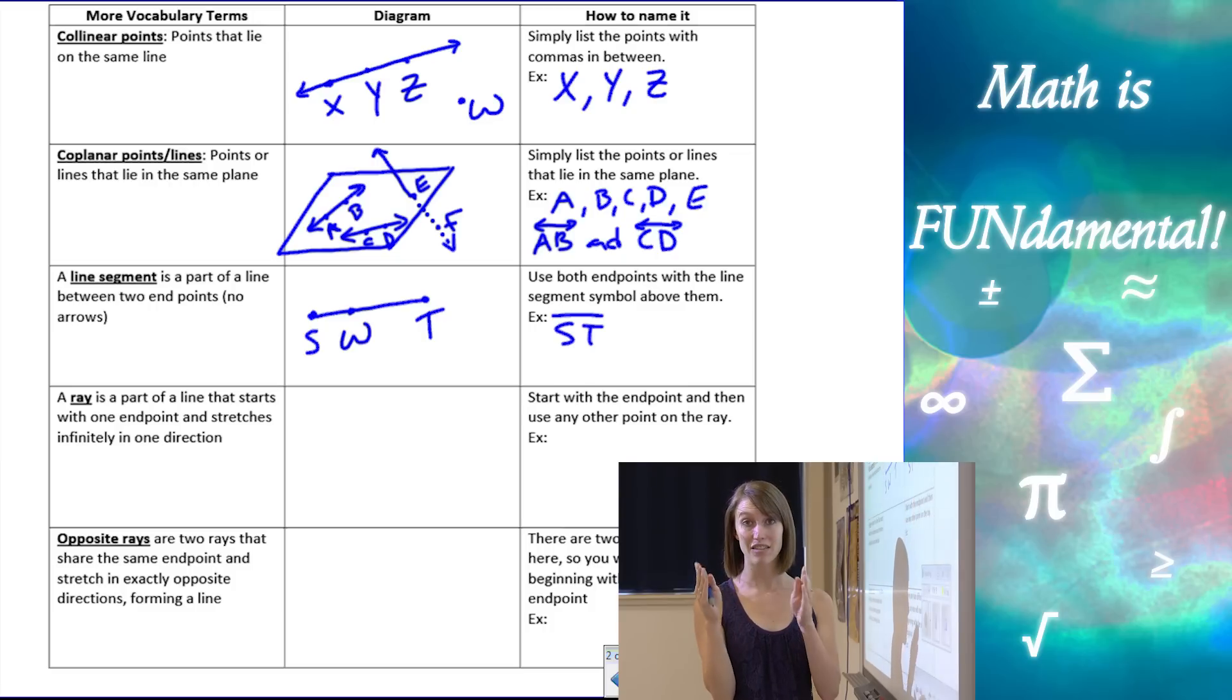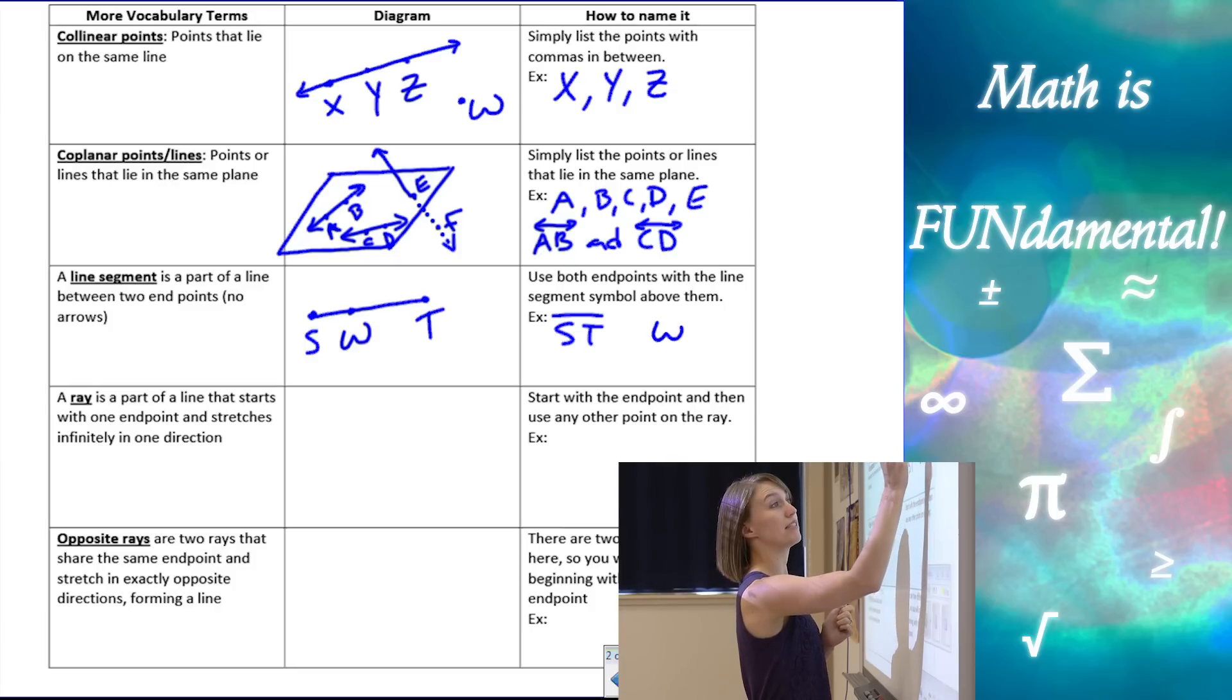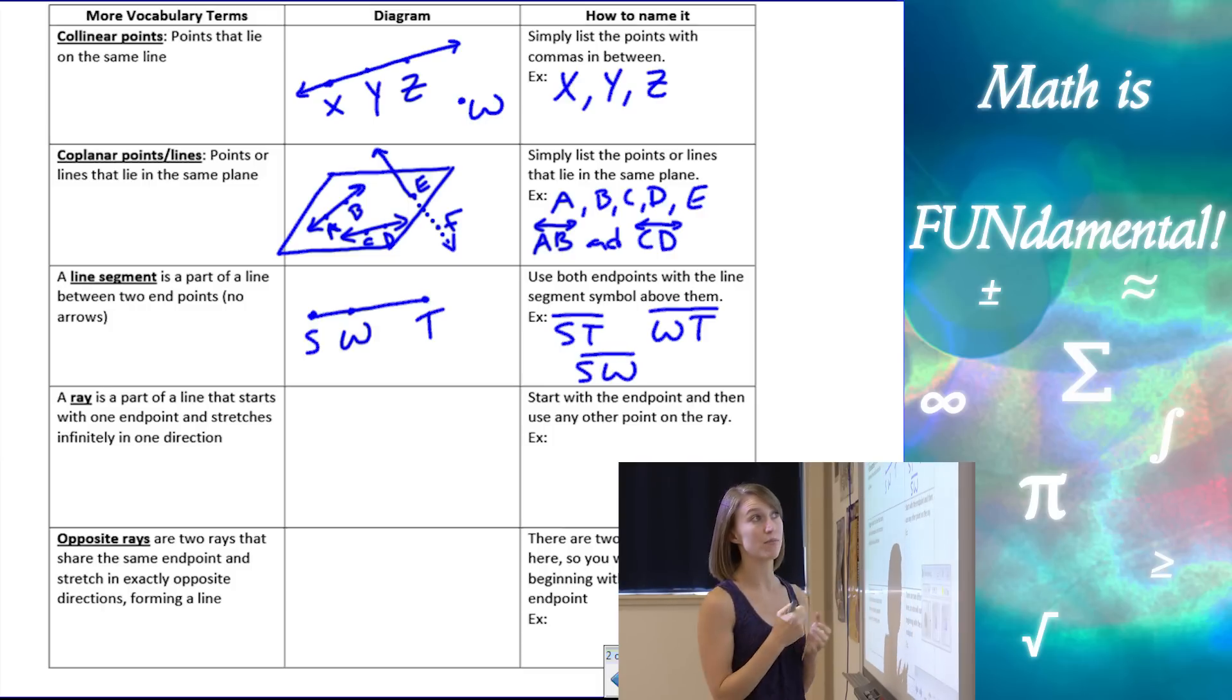I've created the segment WT, which is slightly smaller, and then SW, which is even smaller than those. And if you notice, the symbol I've put above those, it doesn't have any arrows because a line segment does not have any arrows.